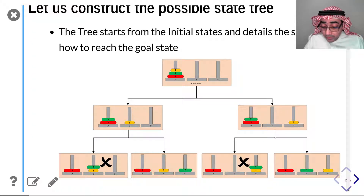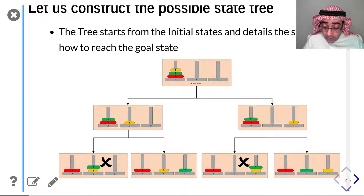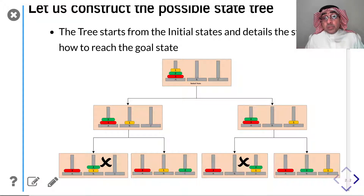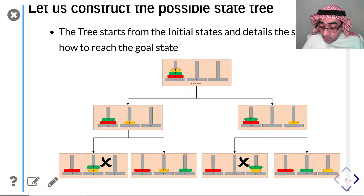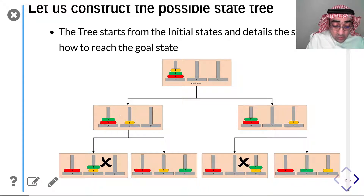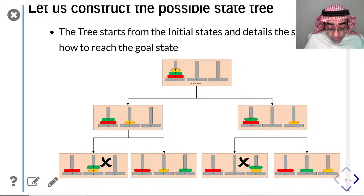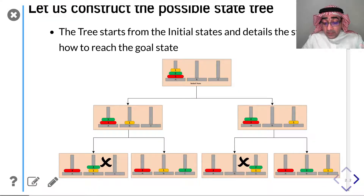The only useful thing remaining is to take disk number two and move it. There are two options: I can put it on top of disk one, or I can put it on pin B. If I put disk two on top of disk one in pin C, I'm violating the constraint that you cannot place a larger disk on a smaller disk, so I remove that state. Similarly on the other branch, disk two can move on top of disk one or to pin C — and again, placing two on top of one violates the constraint, so that state is removed.